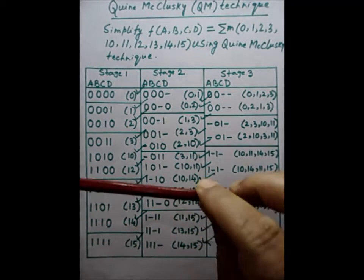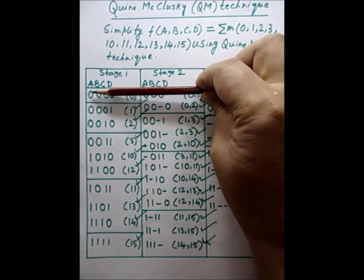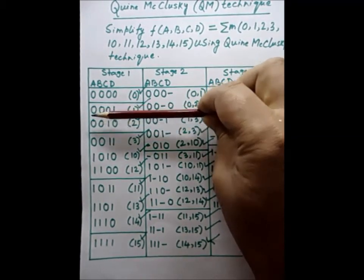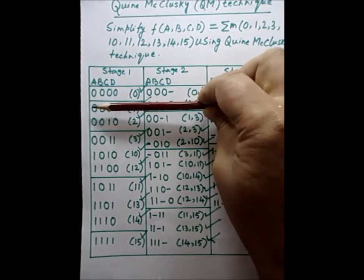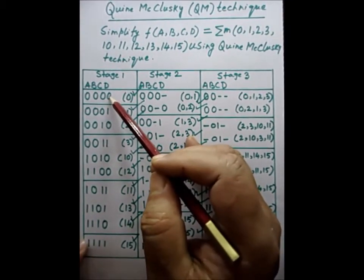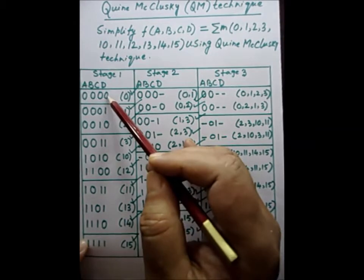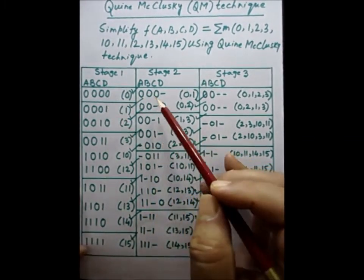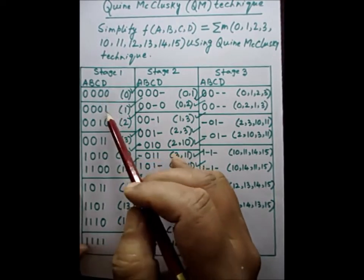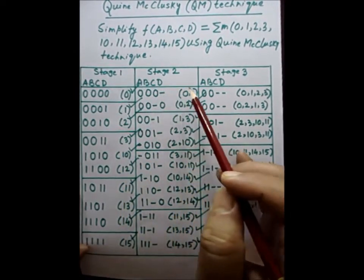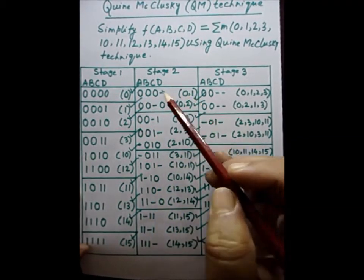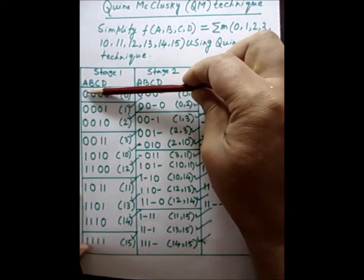The next step: the first group (0000) is mapped with all elements of the next group. Mapping 0000 with 0001, we can see that d-bar and d differ — cancellation happens — so we place a dash in the d position. This is transferred to the second stage as 000- with bracket (0,1), indicating minterms 0 and 1 are involved.